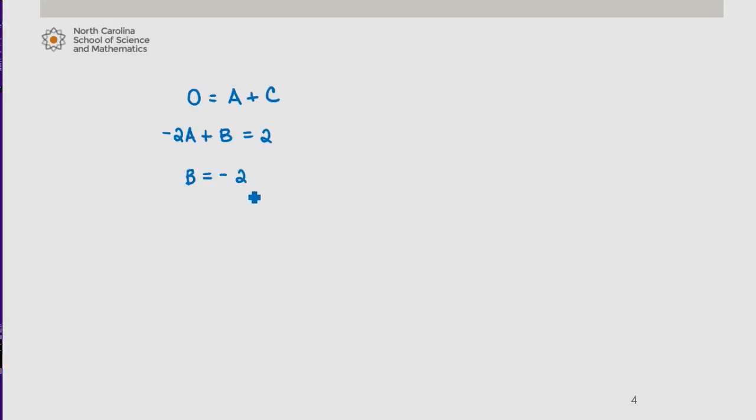Well, with B being negative 2, we can use that in this equation. Negative 2A minus 2 equals 2. So negative 2A equals 4, which tells us that A is equal to negative 2 as well.